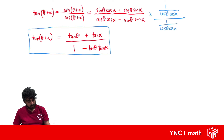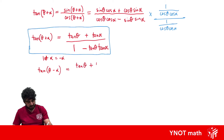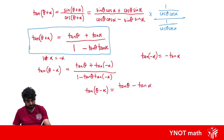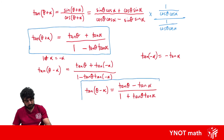Finally, letting α equal −α in the tan(θ + α) formula: tan θ + tan(−α) equals tan θ − tan α, and 1 − tan θ · tan(−α) equals 1 + tan θ tan α. So our last compound angle result is tan(θ − α) = (tan θ − tan α)/(1 + tan θ tan α).